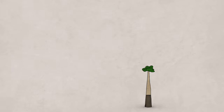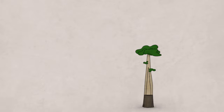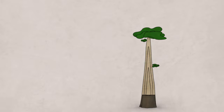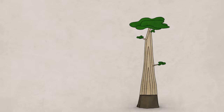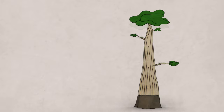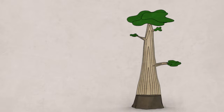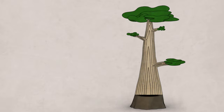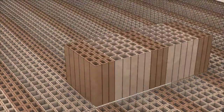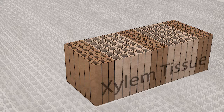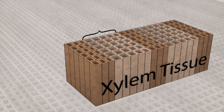A tree gets fatter, or puts on a new layer of wood, every year of its life. We can think of that new wood as essentially a layer of xylem tissue, which is produced by the tree's vascular cambium. At first, when growing conditions are ideal early in the year, the xylem tissue cells are rather large, cell walls are thin, and the cells are light in color overall. We call this light colored xylem tissue early wood.